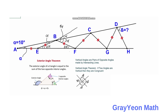Next we focus on triangle BCF. Triangle BCF is an isosceles triangle, and in any isosceles triangle the angles opposite the two congruent sides should have the same measurement of 3 alpha. Next, we extend segment BE again to get an exterior angle, and the exterior angle is 3 alpha plus 3 alpha, which is 6 alpha.